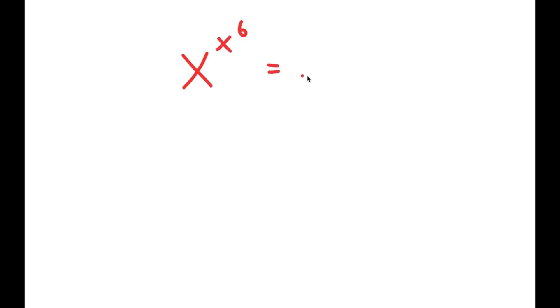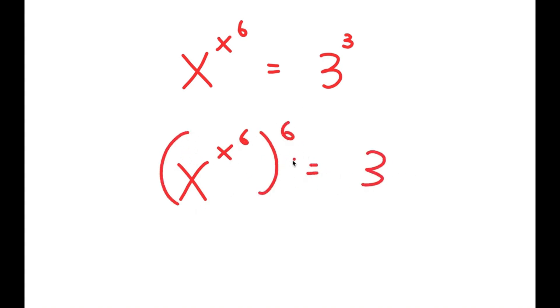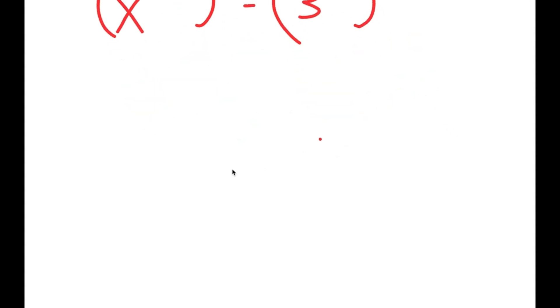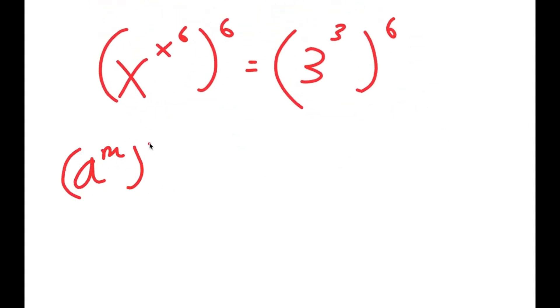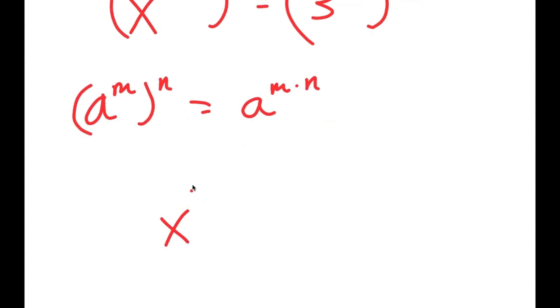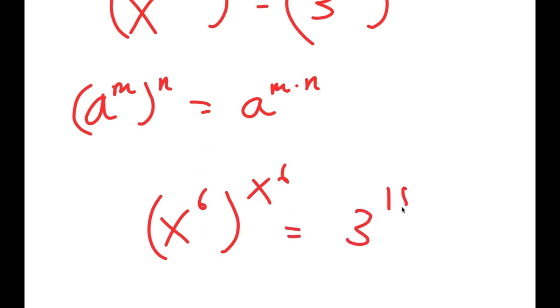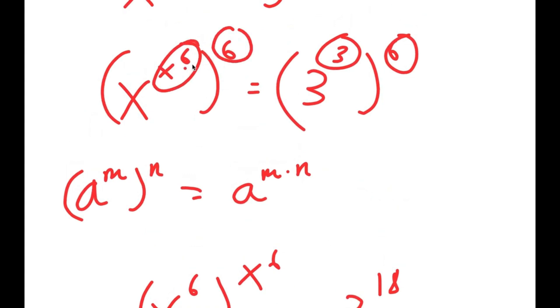Now I'm solving the equation x to the power of x to the power of one-sixth is equal to 3 to the power of 3. To solve this, I'm going to take the power of 6 on both sides. So I get x to the power of x to the one-sixth, all to the power of 6, is equal to 3 to the power of 3 to the power of 6. Using the rule a to the m to the n equals a to the m times n, 3 and 6 multiply to give 3 to the power of 18.